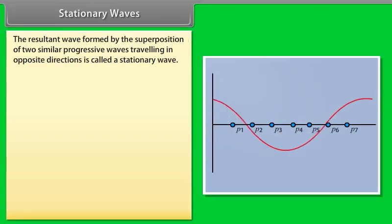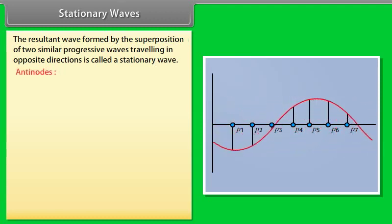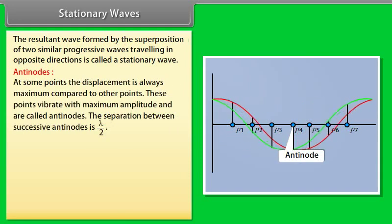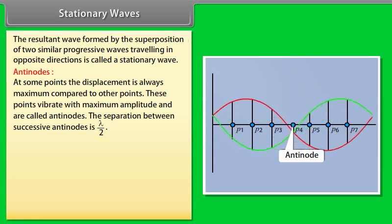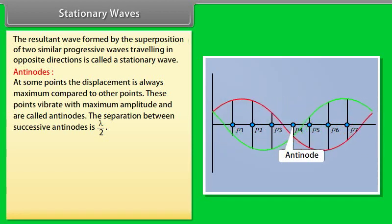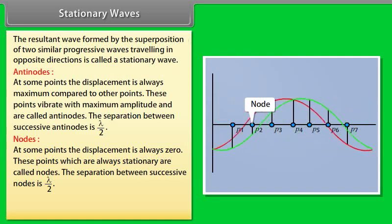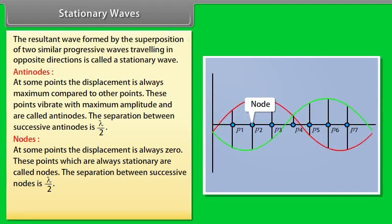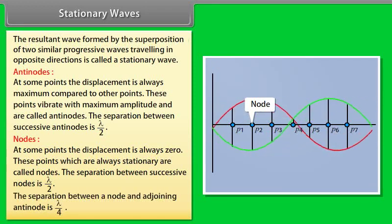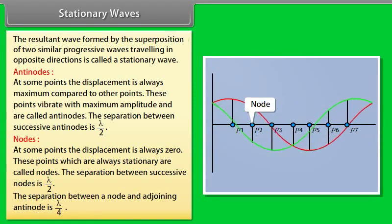Stationary waves: the resultant wave formed by the superposition of two similar progressive waves traveling in opposite directions is called a stationary wave. Antinodes: at some points the displacement is always maximum — these points vibrate with maximum amplitude and are called antinodes; the separation between successive antinodes is λ/2. Nodes: at some points the displacement is always zero — these stationary points are called nodes; the separation between successive nodes is λ/2. The separation between a node and an adjoining antinode is λ/4.